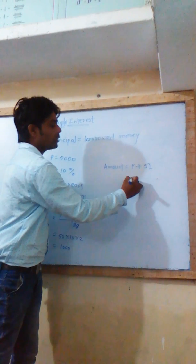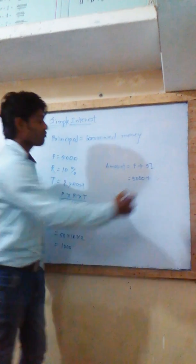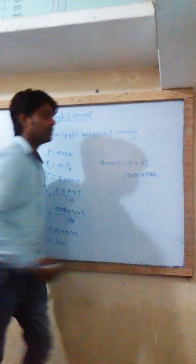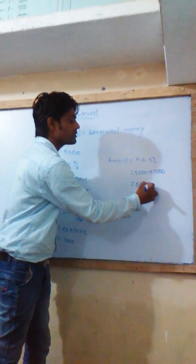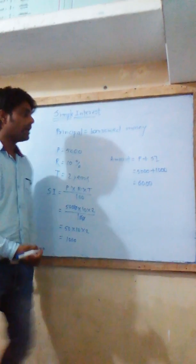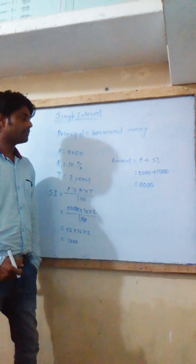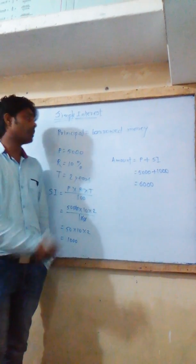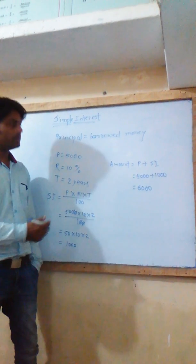Here I have borrowed 5,000 rupees plus 1,000 rupees simple interest, and therefore altogether it is 6,000 rupees. So I need to return back 6,000 rupees if I have borrowed 5,000 rupees at the rate of 10% for 2 years. Thank you.